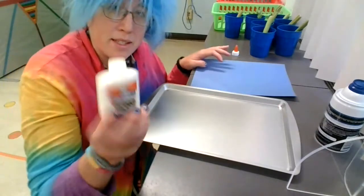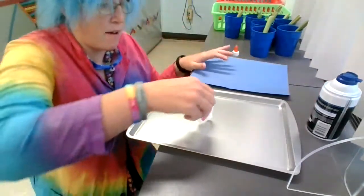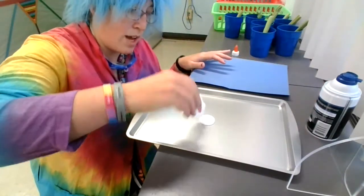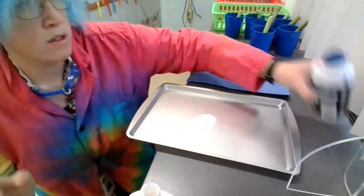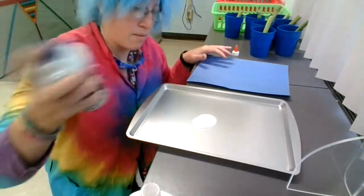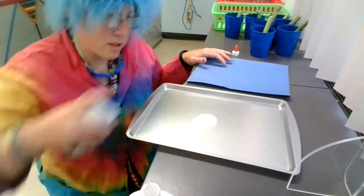We're going to mix some Elmer's glue and some shaving cream together to make some puffy paint. So kind of do an equal amount. So I did that much glue, so I'm going to do about the same amount of shaving cream.